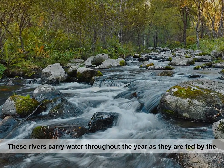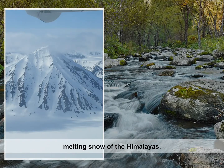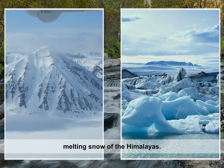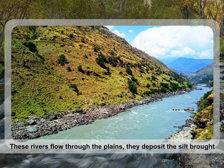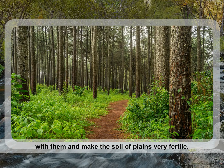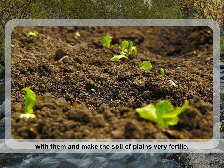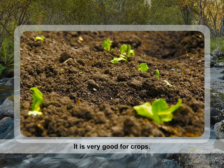These rivers carry water throughout the year as they are fed by the melting snow of the Himalayas. As these rivers flow through the plains, they deposit the silt brought with them and make the soil of the plains very fertile. This fine soil is called alluvium soil. It is very good for crops.